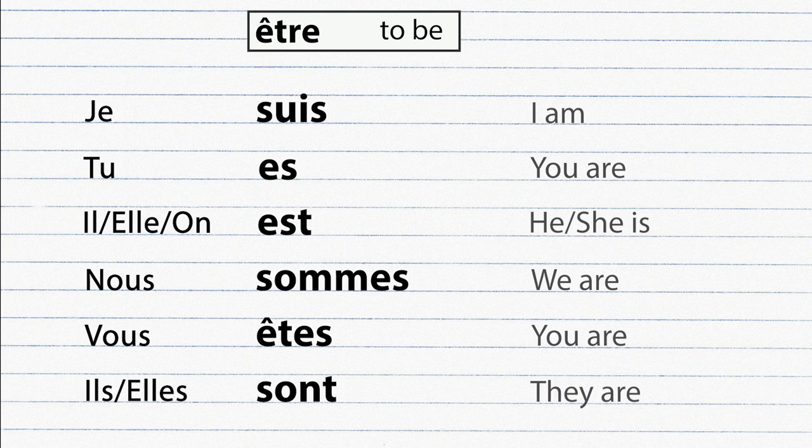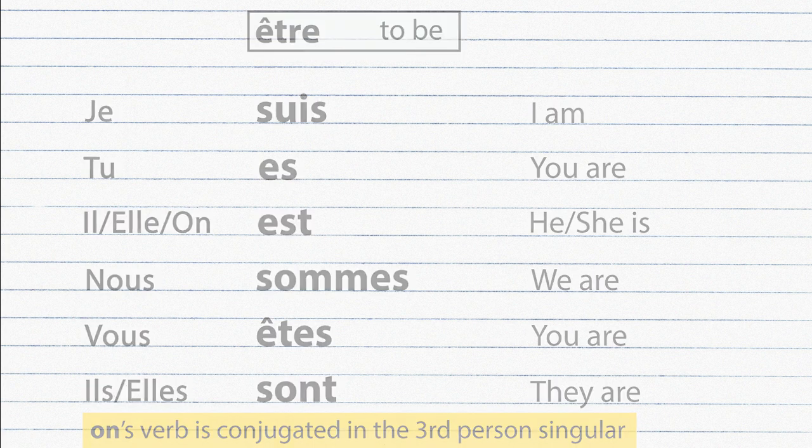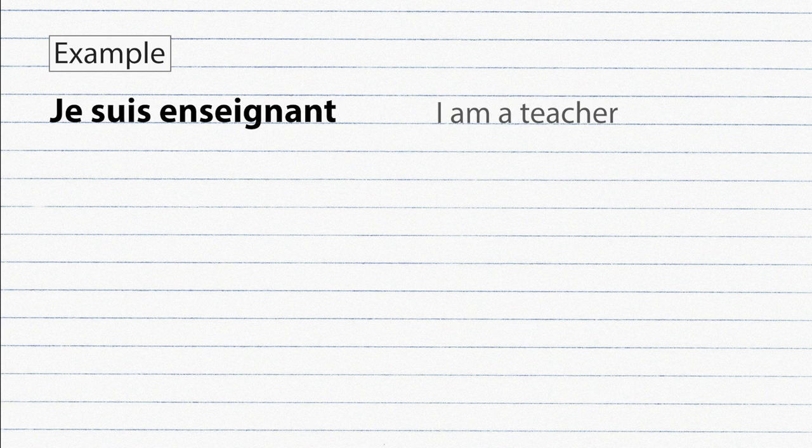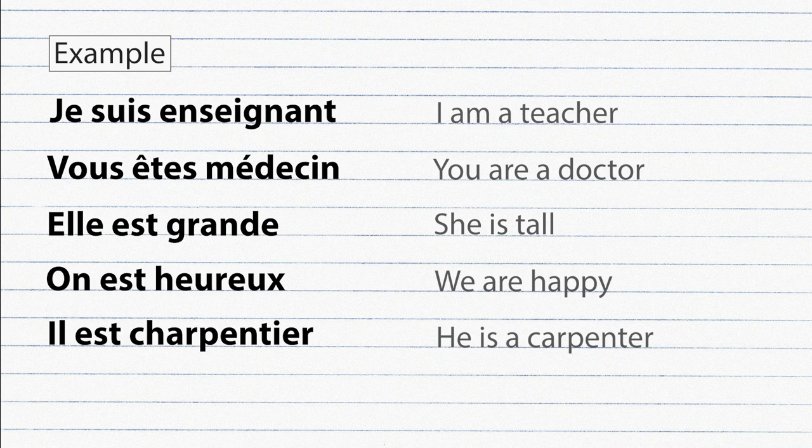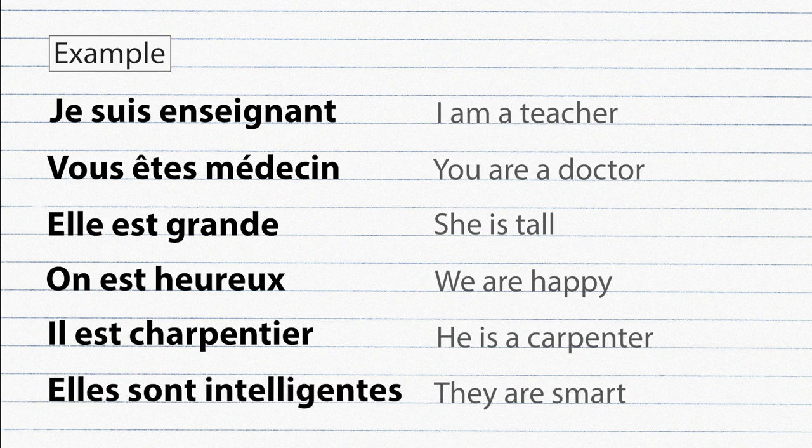To say I am or you are in French we use the verb être. Je suis enseignant. Vous êtes médecin. Elle est grande. On est heureux. Il est charpentier. Elles sont intelligentes.